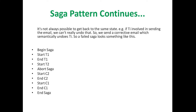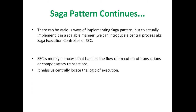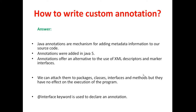A failed saga looks like: Begin Saga → Start T1, End T1 → Start T2 → if T2 fails, abort saga → Start C2, End C2 → Start C1 (for T1), End C1 → End Saga. There can be various ways of implementing the saga pattern, but to implement it in a scalable manner, we can introduce a central process called the Saga Execution Controller (SEC). It is a process that handles the flow of execution of transactions or compensatory transactions and helps us centrally locate the logic of execution. That covers two-phase commit and saga patterns in distributed transactions.